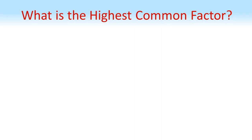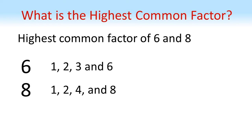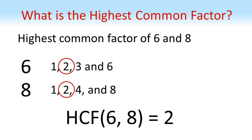The highest common factor is the highest number which is a factor of both numbers and is shared by both of them. For 6 and 8, the factors of 6 are 1, 2, 3, and 6, and the factors of 8 are 1, 2, 4, and 8. The highest number in both lists is 2, so the highest common factor of 6 and 8 is 2.